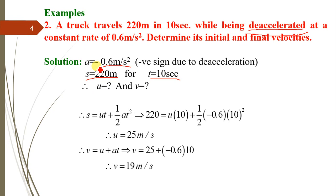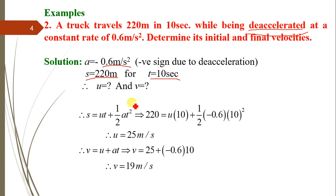Whenever it is said that a body is accelerated, the sign convention for acceleration is positive. But whenever it is said that the body is decelerating, the acceleration is taken as negative. So a = −0.6 m/s², where the negative sign is due to deceleration, and we have to determine the initial velocity u and final velocity v using the equations of kinematics.